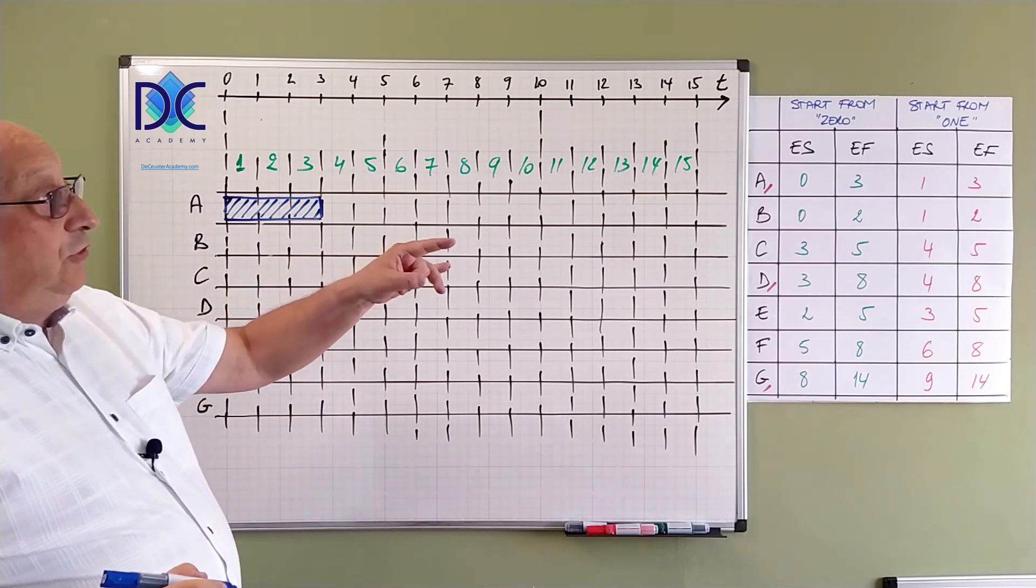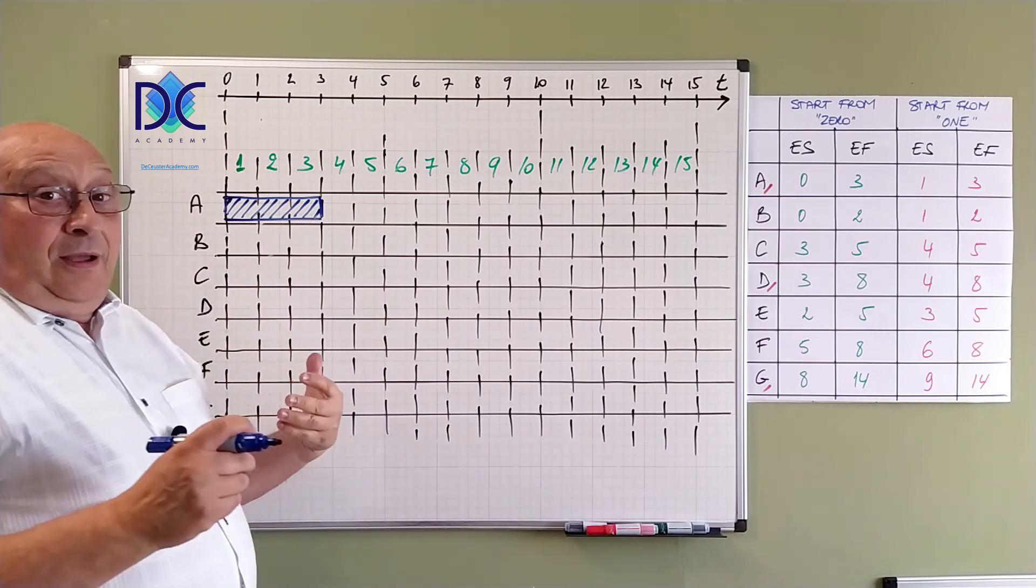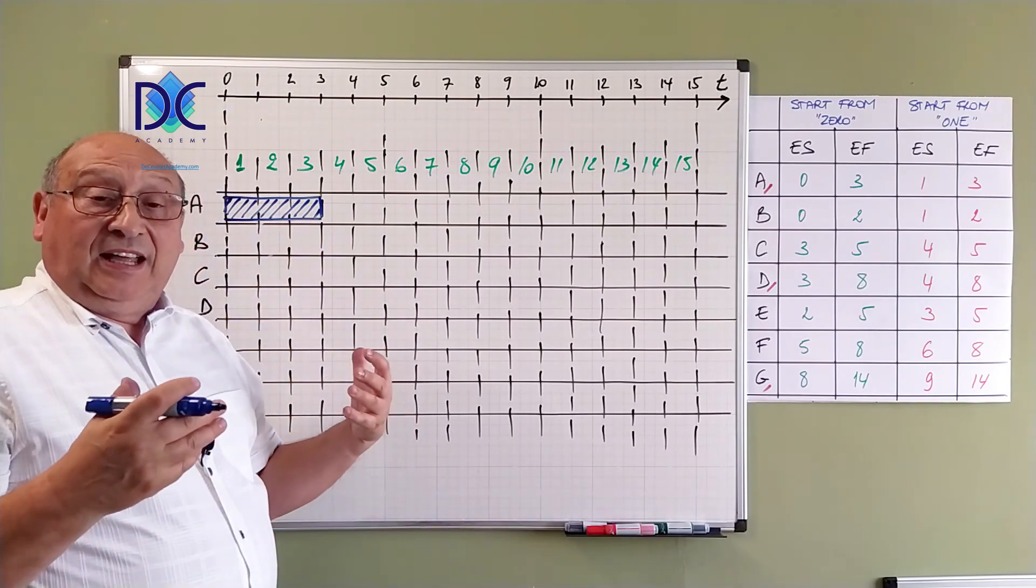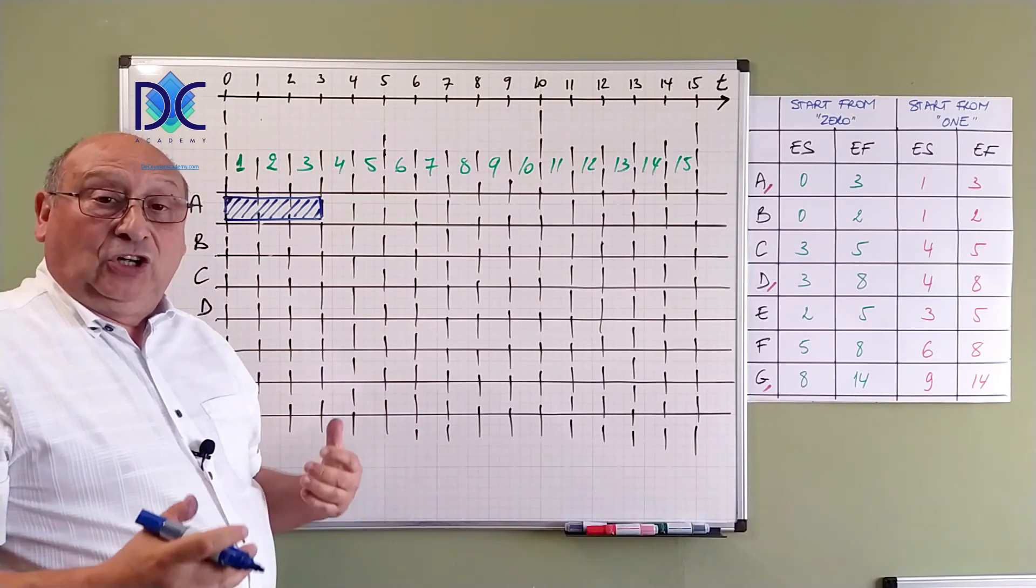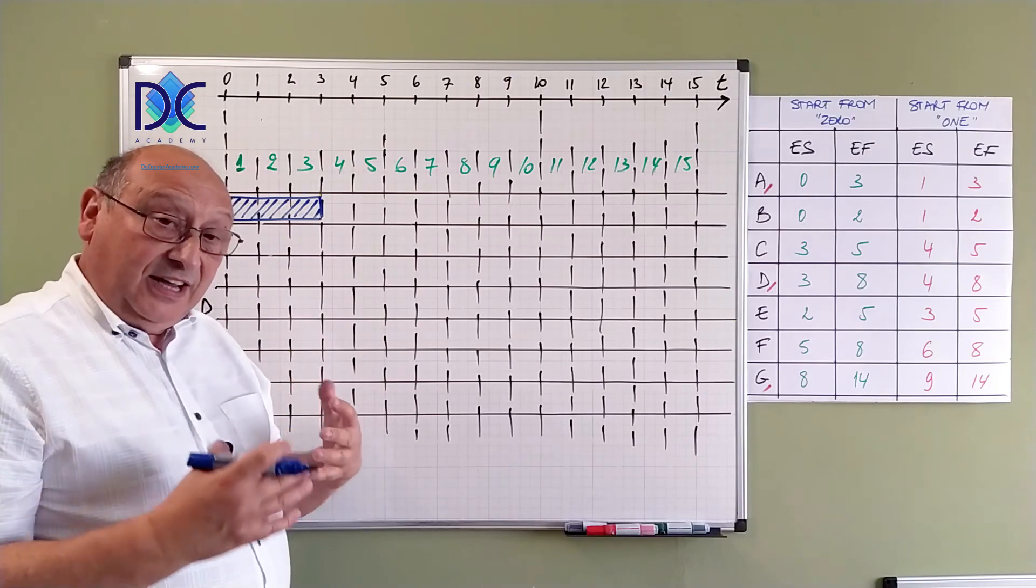When I look at the start from 1, we have 1, 2, 3. We have different methods but we see that the Gantt chart shows the same information. Basically, there is no difference.